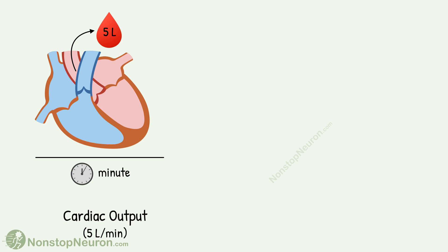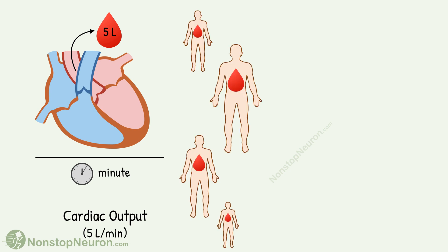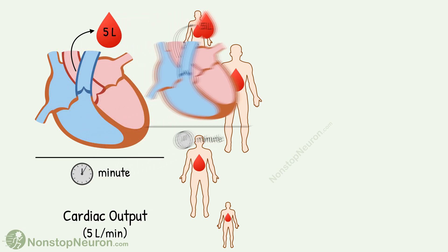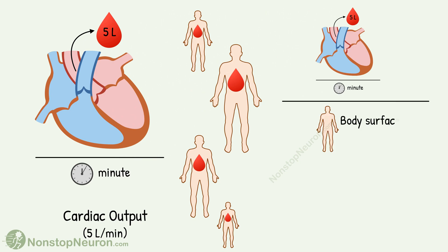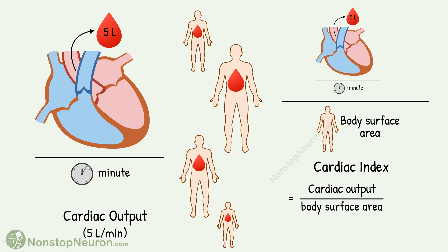This number is not universal. In different people, the cardiac output is different, depending on their body size. So cardiac output is usually normalized to body surface area. The parameter we thus get is the cardiac index — it's cardiac output per square meter of body surface area.